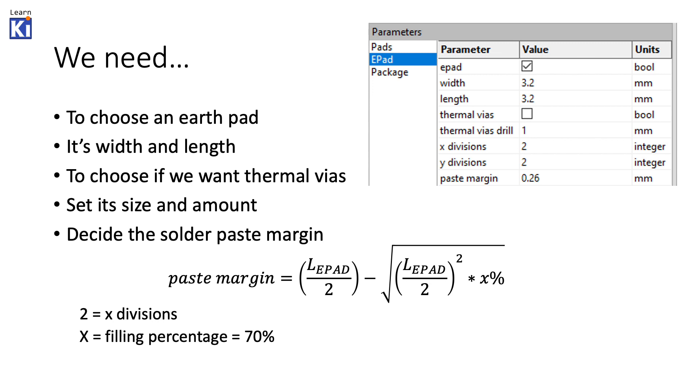And in the next window we get to choose the earth pad or ground pad and if we need it. And we do. We can set its size. Choose thermal vias. I won't go into them in this video. We can do that in a video with thermal properties as subject.